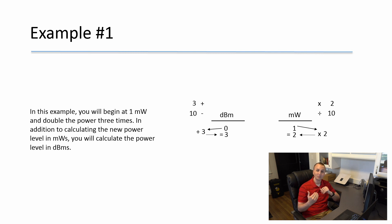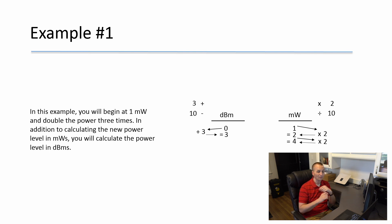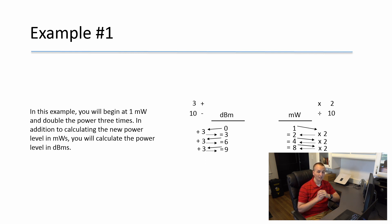We can continue doubling: 2 milliwatts doubled is 4 milliwatts, and we add another 3 dB, giving 6 dBm equals 4 milliwatts. Double again: 4 milliwatts becomes 8 milliwatts and 6 dBm becomes 9 dBm. That's the concept of plus 3 dB constantly doubling your absolute power.